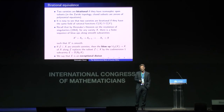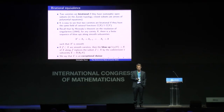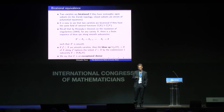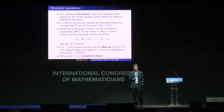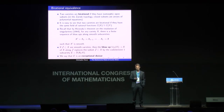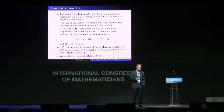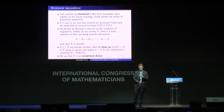One advantage of working up to birational isomorphism is that even if you started with a singular variety, a non-smooth variety, by Hironaka's result, you can replace it by a smooth variety by a finite sequence of relatively well-understood operations known as blow-ups. A blow-up is a typical example of a birational operation. If we have a smooth variety X and a smooth sub-variety Z, then the blow-up of X along Z is a surgery that replaces Z with a codimension-one sub-variety called an exceptional divisor, and the points of the exceptional divisor correspond to all the normal directions at points of Z in X.